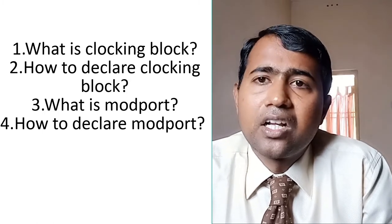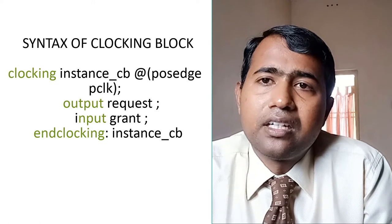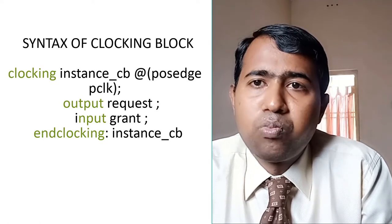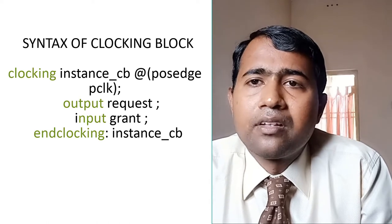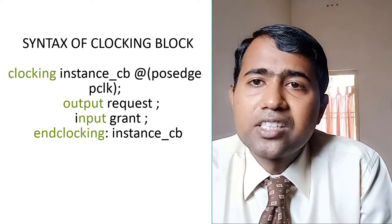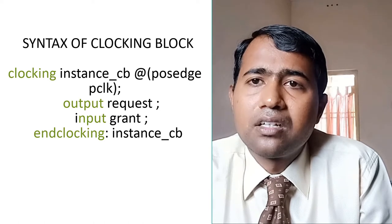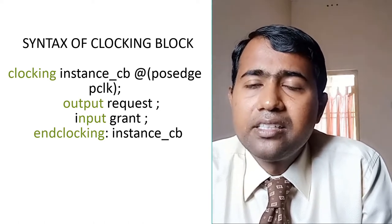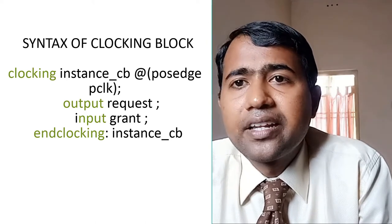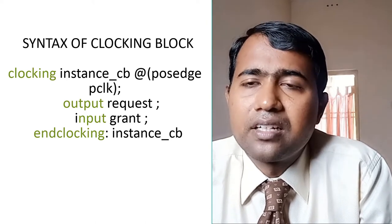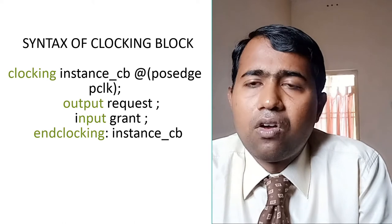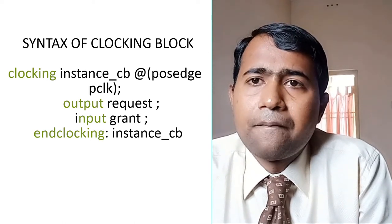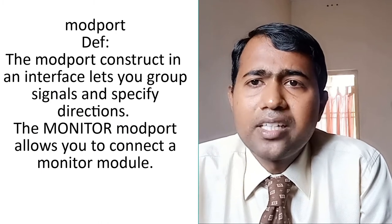The syntax of the clocking block looks like this: 'clocking <name> @(<clock_signal>); ... endclocking'. Inside the clocking block, we can declare input and output signals. The instance name is placed after the 'clocking' keyword, and inside the parenthesis we declare the clock signal. This is the syntax of the clocking block.